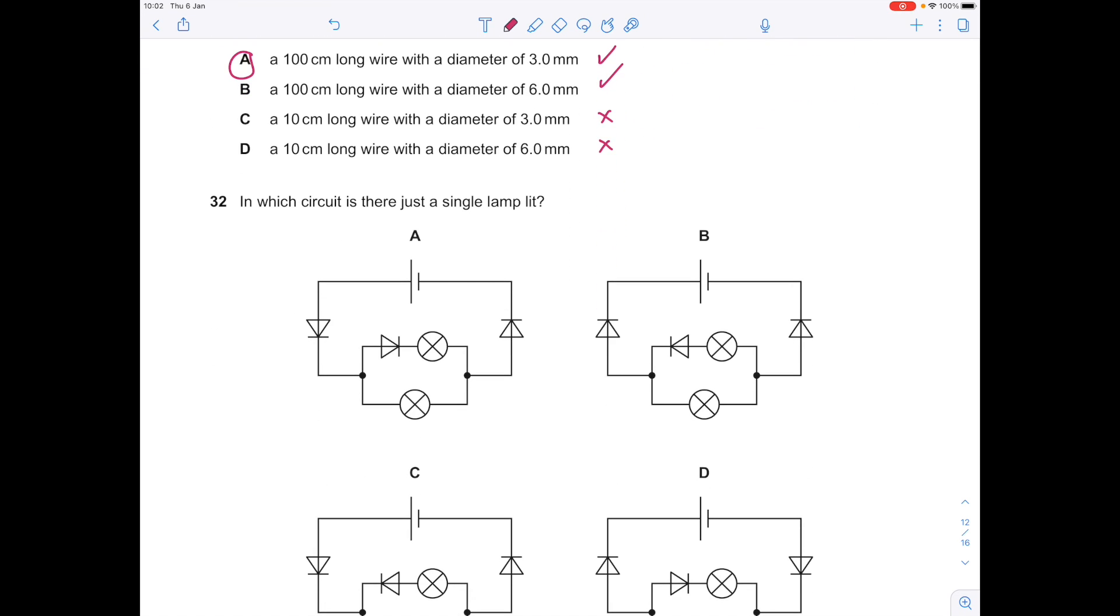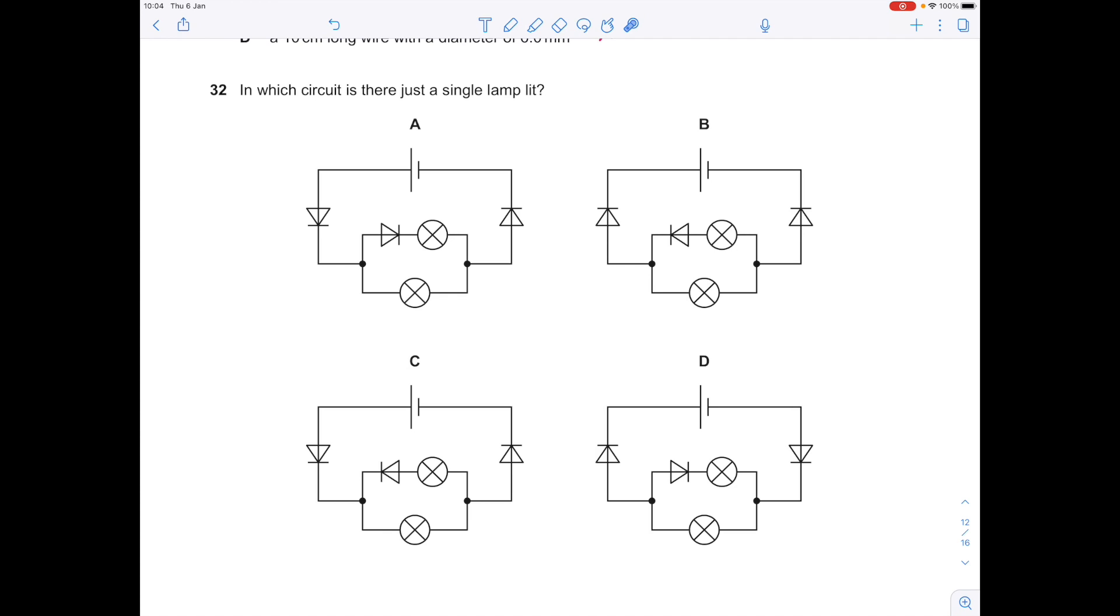In which circuit is there just a single lamp lit? Let's go through these in turn. The electrons are coming out of here, flowing through this first diode, which allows current to flow only in the direction pointed by the arrow. It comes down to here and then reaches this junction where they can flow either this way or this way. At that point, both light bulbs will be on, which is not what this question is asking about. It wants just a single lamp lit.